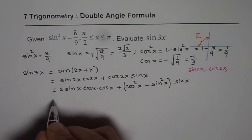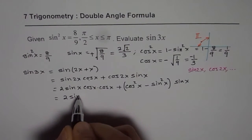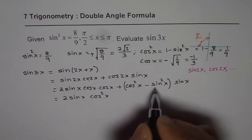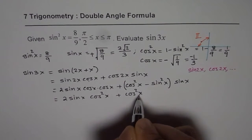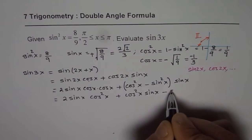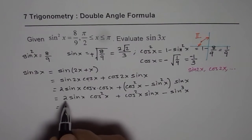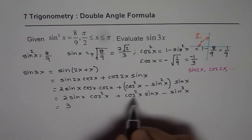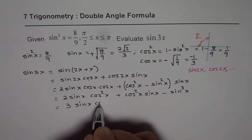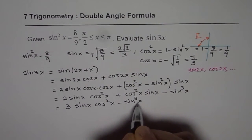So now we can open this up. We get 2 sin x cos²x. And here we have plus cos²x sin x minus sin³x. So we get 2 + 1, 3 sin x cos²x - sin³x.